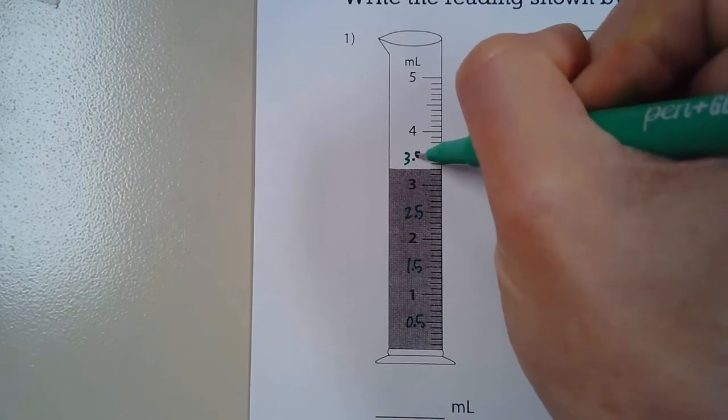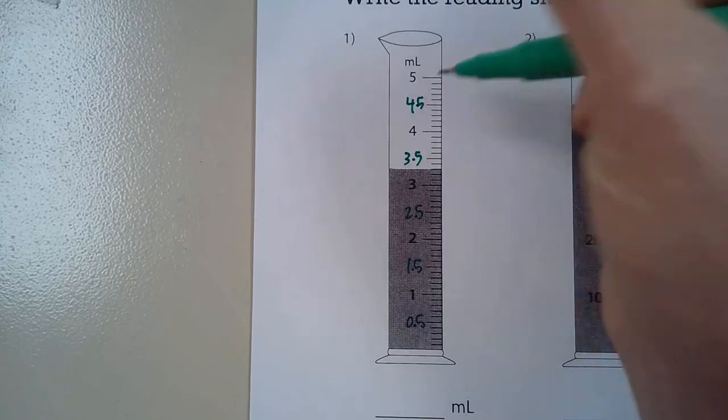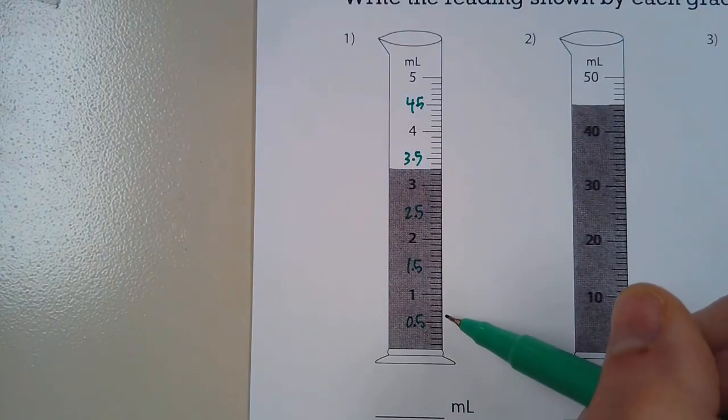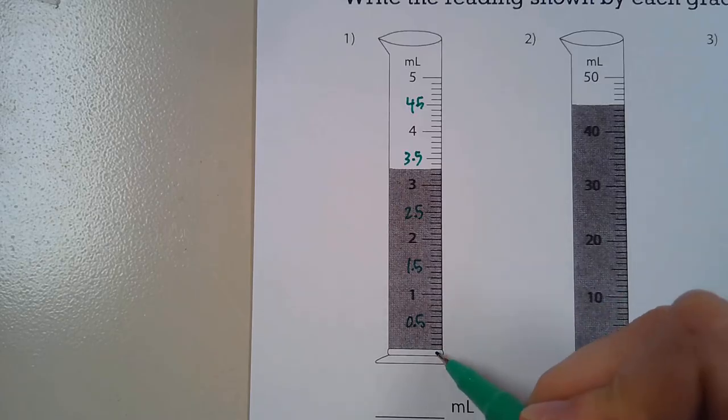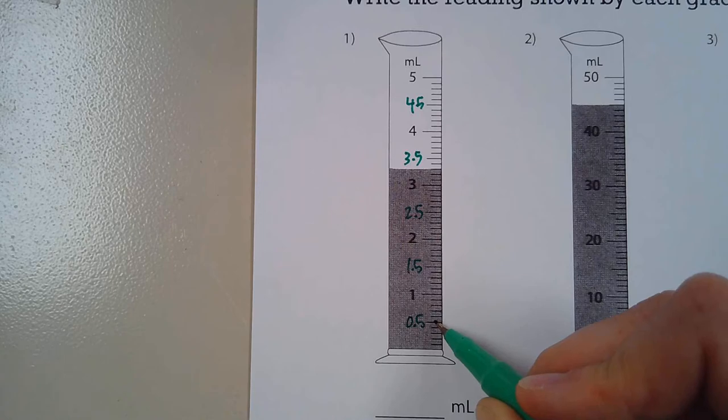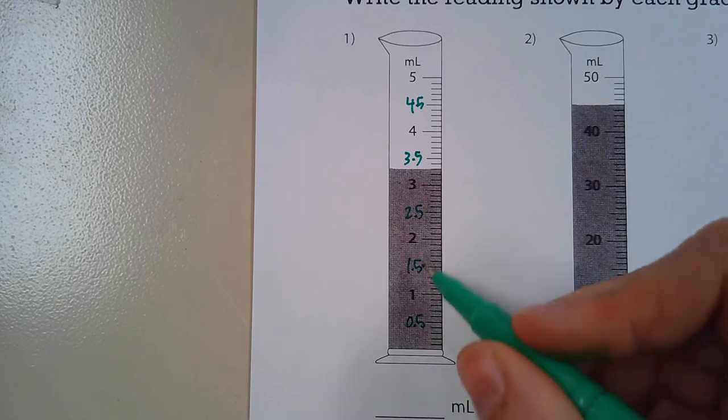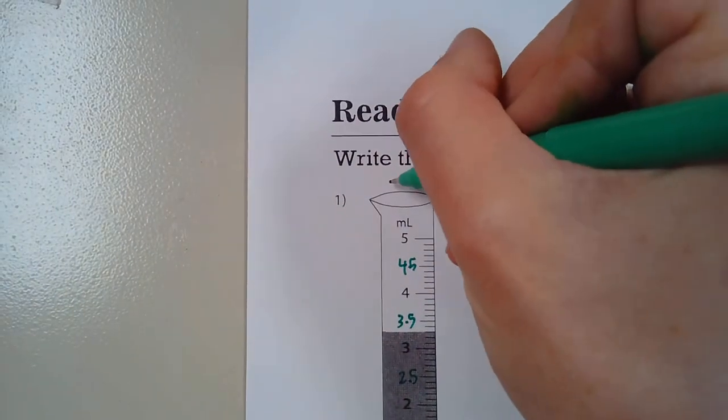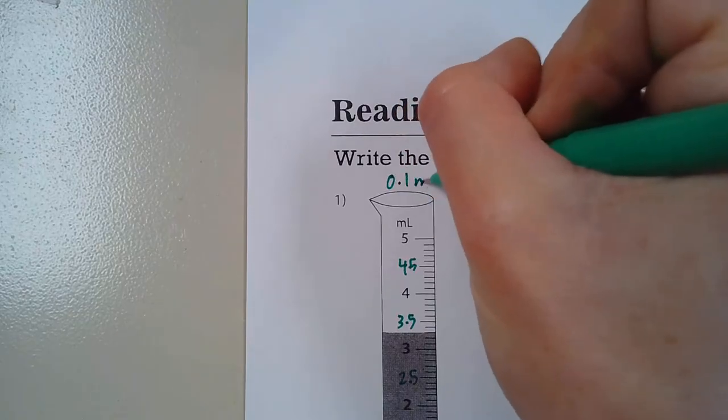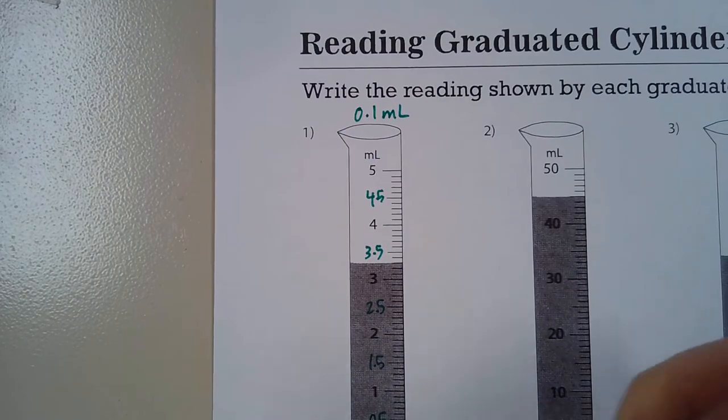So from the very bottom to this 0.5 we need to figure out, well what are these smallest lines counting by. So if they're counting by 0.1, 0.2, 0.3, 0.4, 0.5 that would be correct. So this particular one the scale is 0.1 milliliters.